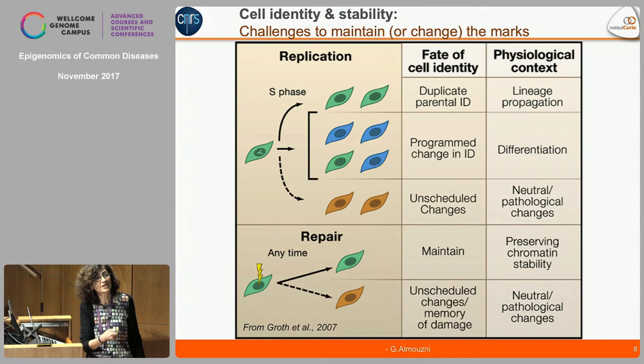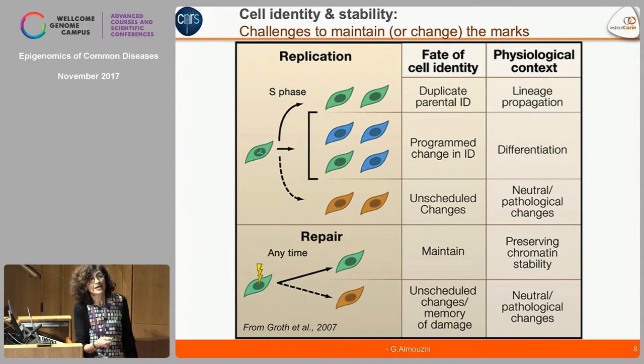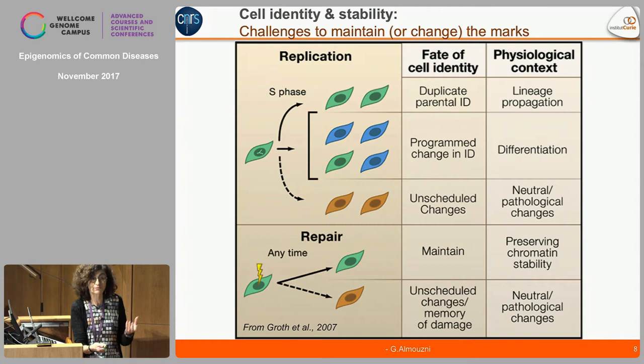For repair, that can happen anytime during the cell cycle, and the same type of issue has to be considered: you can consider maintaining the status you had before, preserving chromatin stability and integrity, or have unscheduled changes. That could represent a way to memorize damage, which can also impinge on the future of these particular cells — some may be neutral or pathological, depending also on the environment.